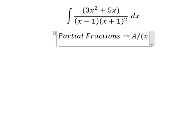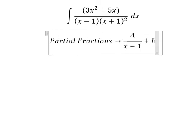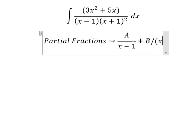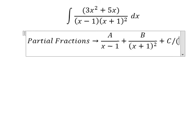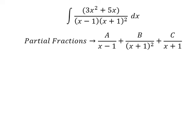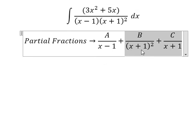So A over x minus 1, B over x plus 1 to the power of 2, C over x plus 1. Because we have the power 2 here, in this situation we need to have 2 fractions here, and later we need to reduce the power from 2 to 1.